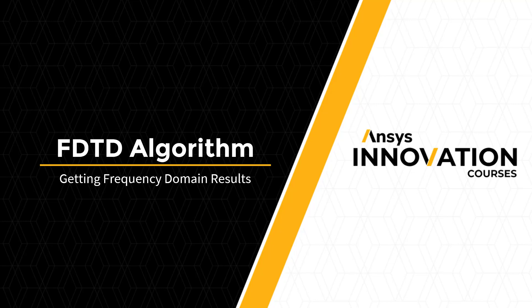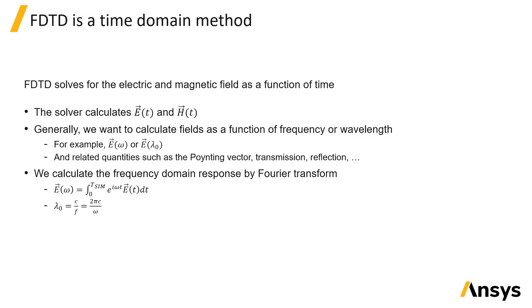Getting frequency domain results from FDTD. FDTD is a time domain method, which means that we solve for the electric and magnetic fields as a function of time.